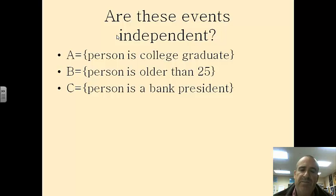But what about these? A person is a college graduate, a person is older than 25, or the person is a bank president. No, these events are not independent. You can't become a bank president unless you are also a college graduate and most likely older than 25. So these are all examples of the way that these things are related.